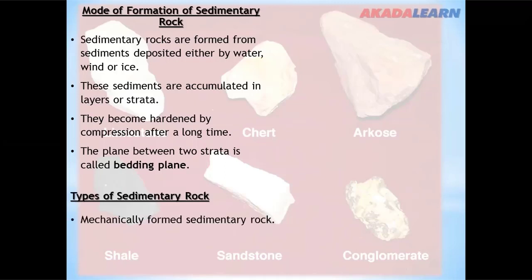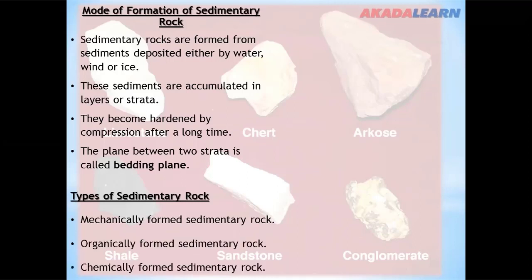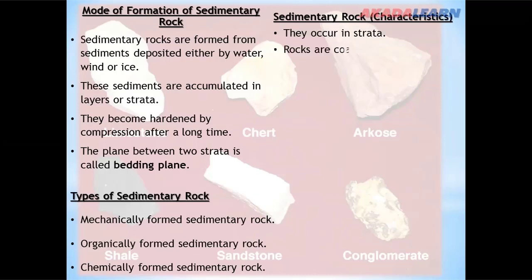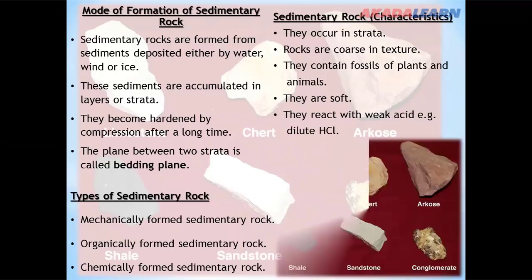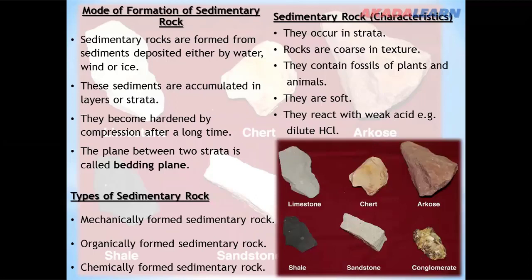Types of sedimentary rocks: we have mechanically formed sedimentary rock, organically formed sedimentary rock, and chemically formed sedimentary rock. Characteristics of sedimentary rocks: they occur in strata, rocks are coarse in texture, they contain fossils of plants and animals, they are soft, and they react with weak acid such as dilute hydrogen chloride. Examples include limestone, chert, shale, sandstone, and conglomerate.